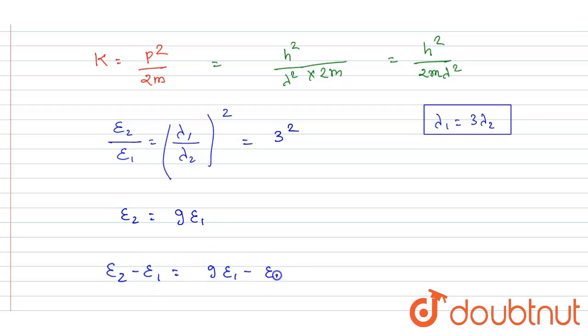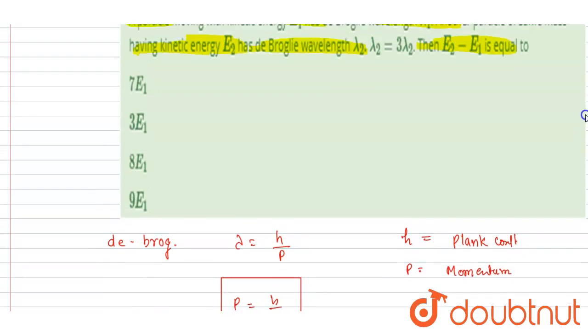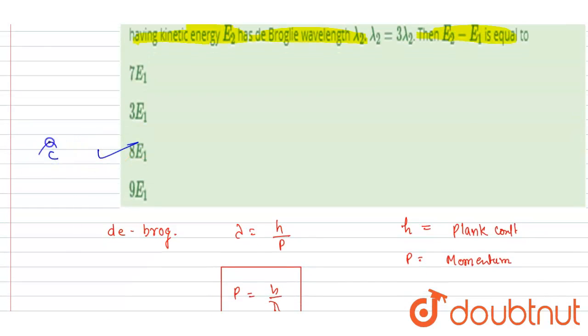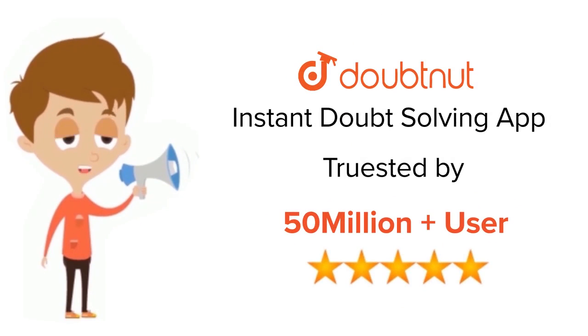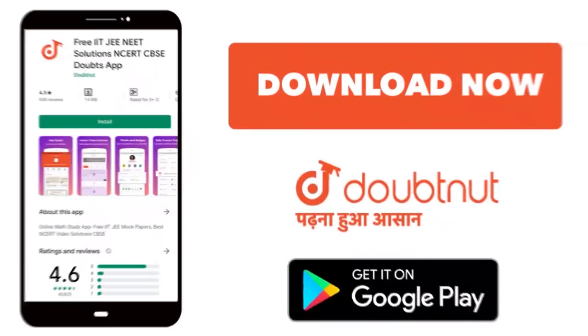Now we wanted E2 minus E1. E2 minus E1 will be 9E1 minus E1, so it will be 8E1, which is the correct answer. You can check the option, so C here will be the correct option. Thank you. For class 6 to 12, IIT JEE and NEET level, trusted by more than 5 crore students, download Doubtnet app today.